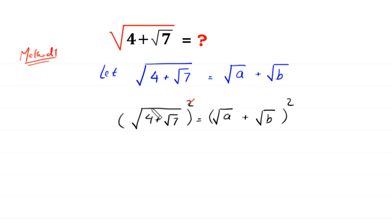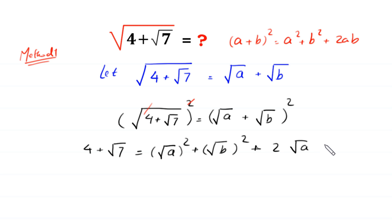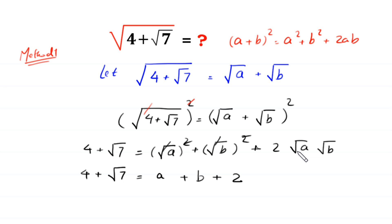The square cancels with the square root on the left side, leaving 4 plus square root of 7. On the right side, by the algebraic identity (a+b)² = a² + b² + 2ab, we get: square root of a squared plus square root of b squared plus 2 times square root of a times square root of b, which simplifies to a plus b plus 2 times square root of ab.